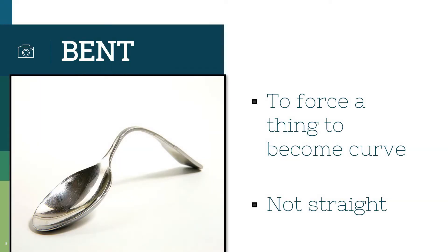Before we proceed, we are going to define what 'bent' is. Bent is to force a thing to become curved or not straight. For example, this spoon — straight up a spoon. They applied force to it so that it has a curve.